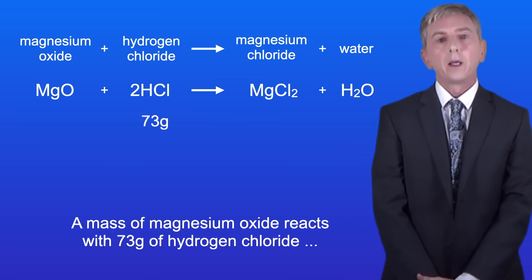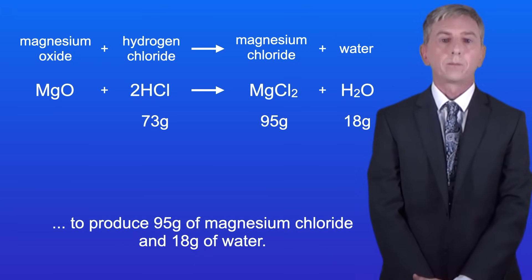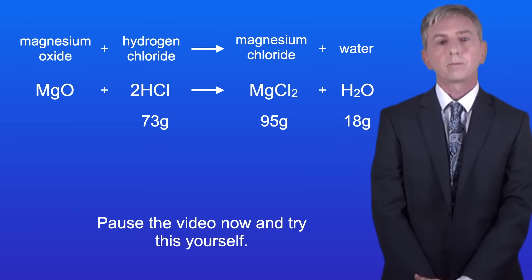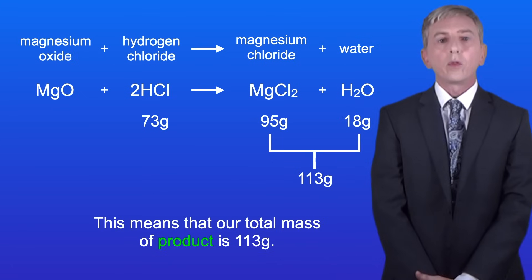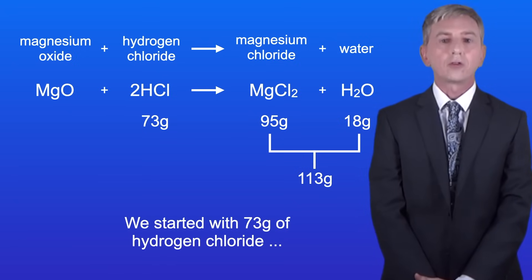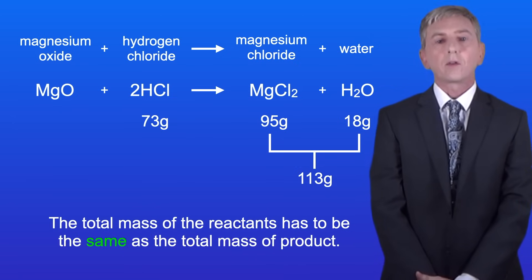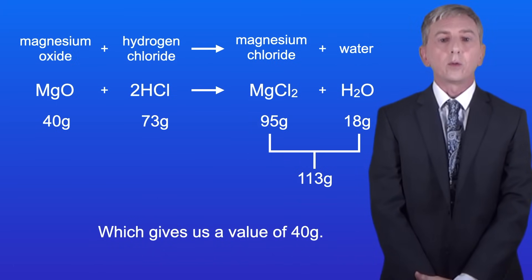Here's one final question. A mass of magnesium oxide reacts with 73 grams of hydrogen chloride to produce 95 grams of magnesium chloride and 18 grams of water. Calculate the mass of magnesium oxide in the reaction. Pause the video now and try this yourself. We've made 95 grams of magnesium chloride and 18 grams of water, so our total mass of product is 113 grams. We started with 73 grams of hydrogen chloride and need to calculate the mass of magnesium oxide that reacted. The total mass of the reactants has to equal the total mass of product, so the mass of magnesium oxide must be 113 grams minus 73 grams, which gives us 40 grams.